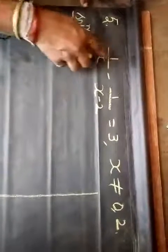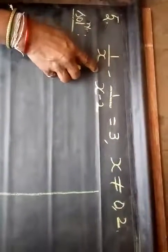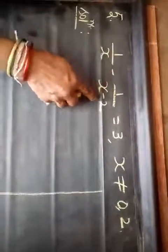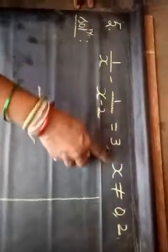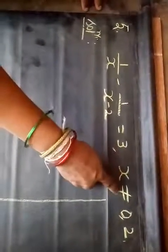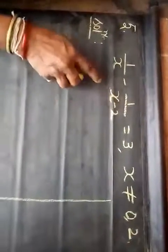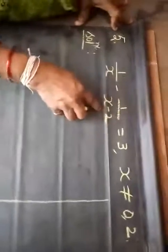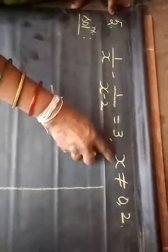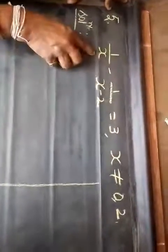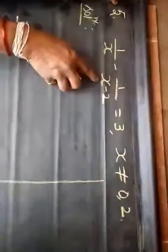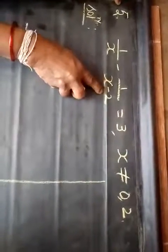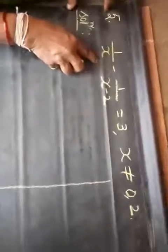The fifth sum is 1/x minus 1/(x-2) which is equal to 3. The condition is x must not be equal to 0, and x must not be equal to 2, because if x is 2 then x minus 2 becomes 0. Now let us try to bring this to the standard form of the quadratic equation.